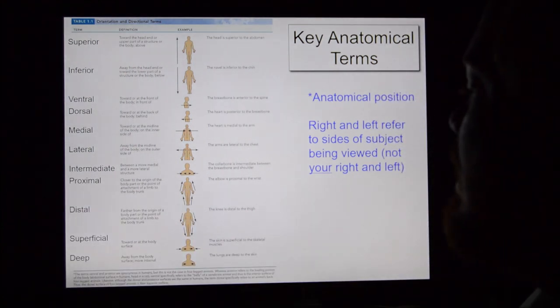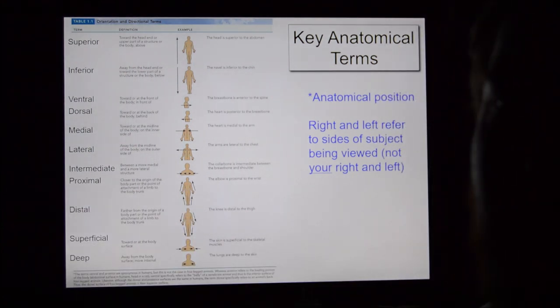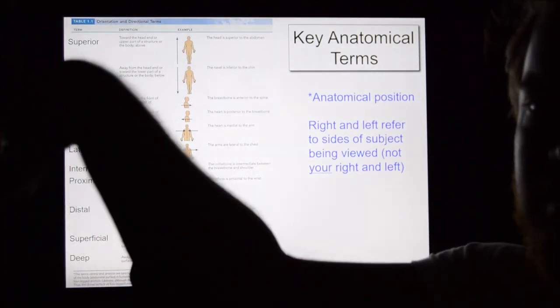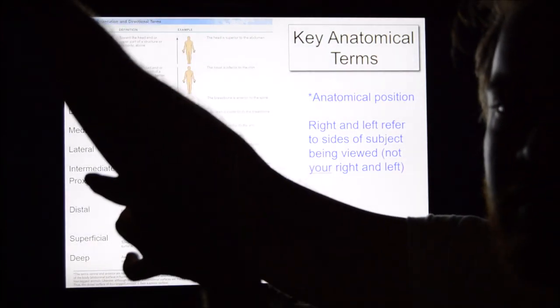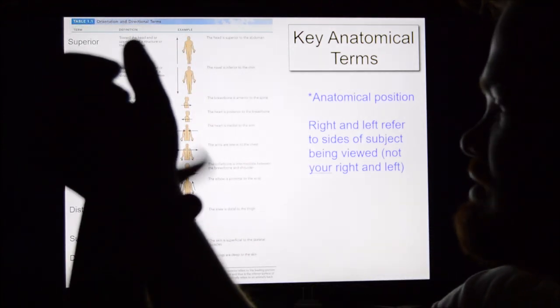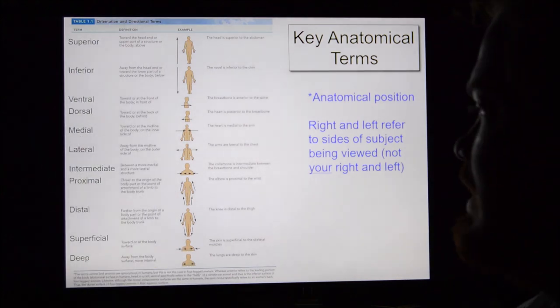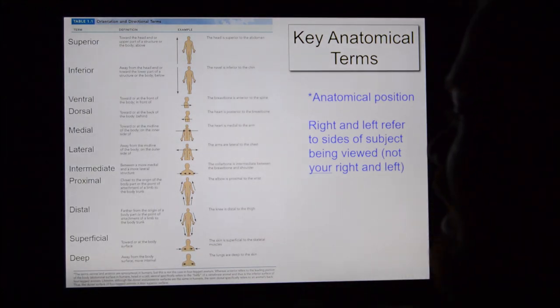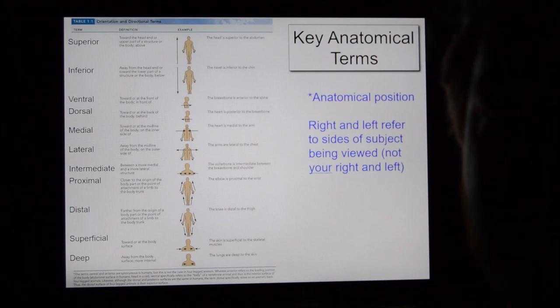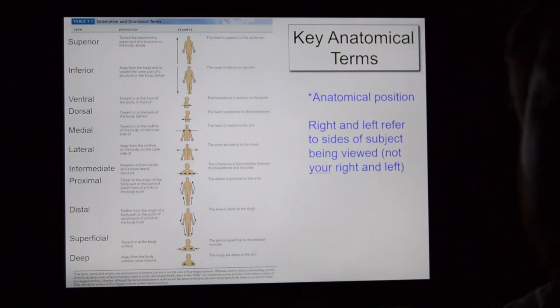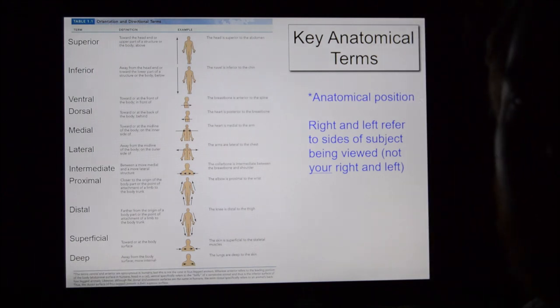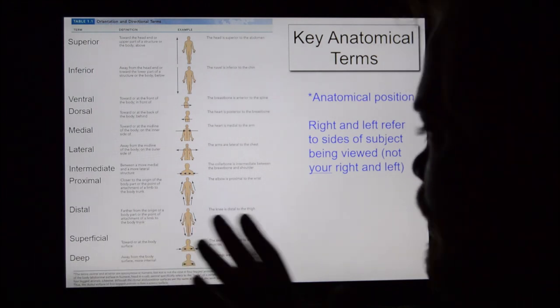Proximal and distal: proximal means close to the trunk of the body. For example, these are the proximal epiphyses of my radius and ulna. Distal would be out towards the wrist. My elbow is proximal compared to my hand. My wrist is proximal compared to my fingers. My fingers are distal compared to my wrist.